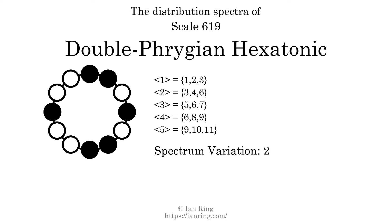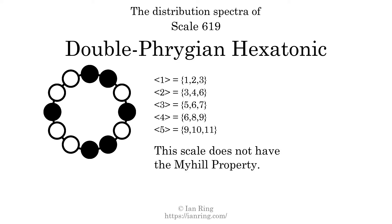The spectrum variation is the sum of all the widths, divided by the number of tones. The spectrum variation of this scale is 2. Since the variation is greater than 0, this indicates that the scale is not perfectly even. The highest spectrum width is 3, so this scale is not maximally even. This scale does not have the Myhill property. Since the generic interval ranges overlap, this scale is an improper scale.